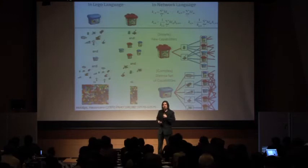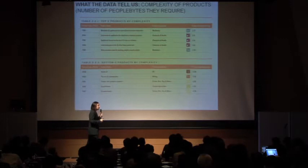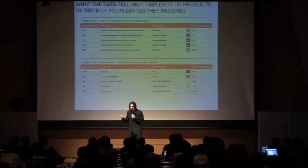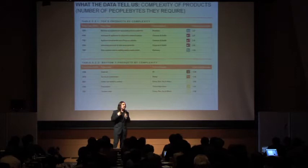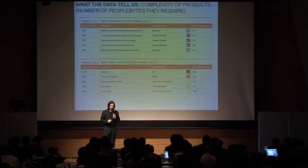When we take this into the data, these are the top five most complex products in the world and the least complex products. The most complex products are things like instruments and appliances used to do physical or chemical analysis, machines based on knowledge of X-rays, and machine tools for working metal. The least complex products would be things like crude oil, tin ore, cocoa beans, sesame seeds, or raw cotton.